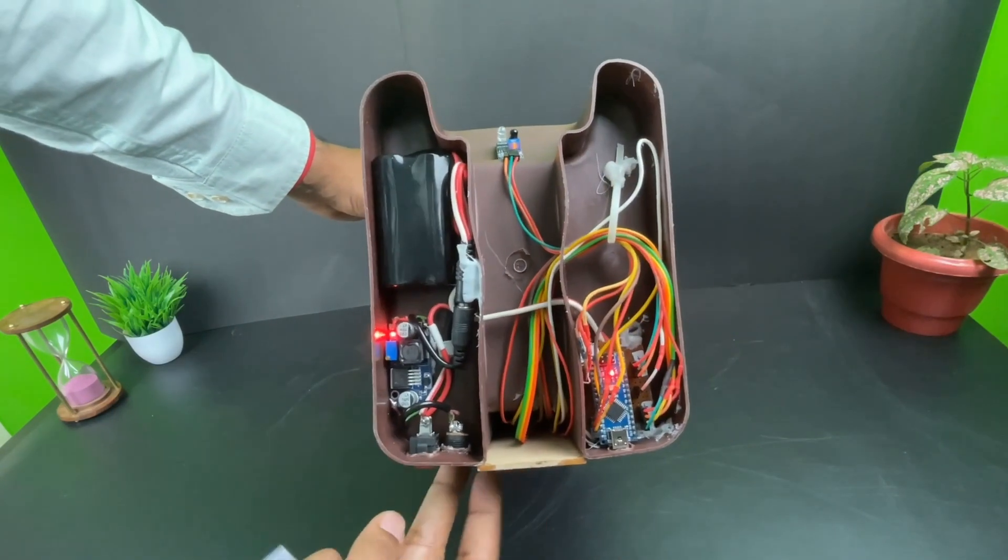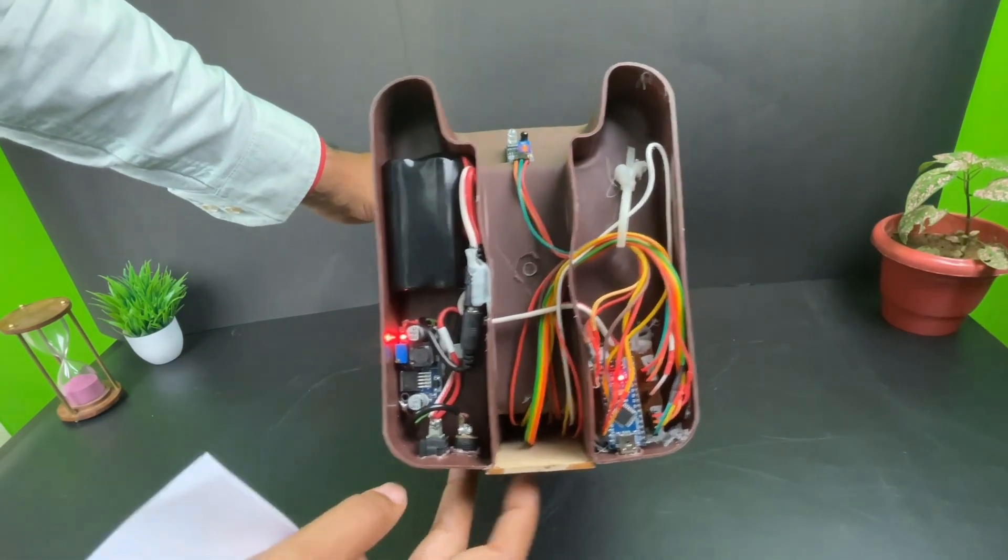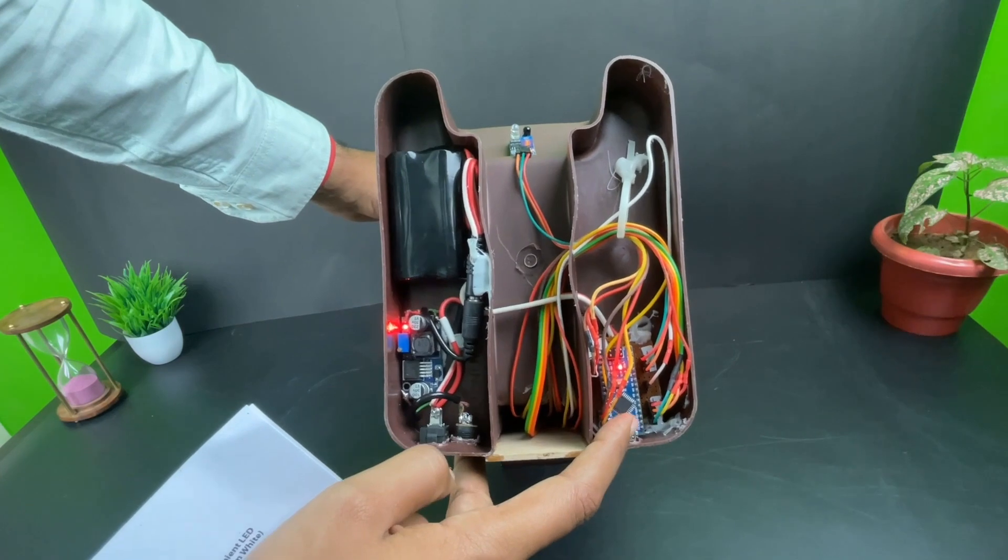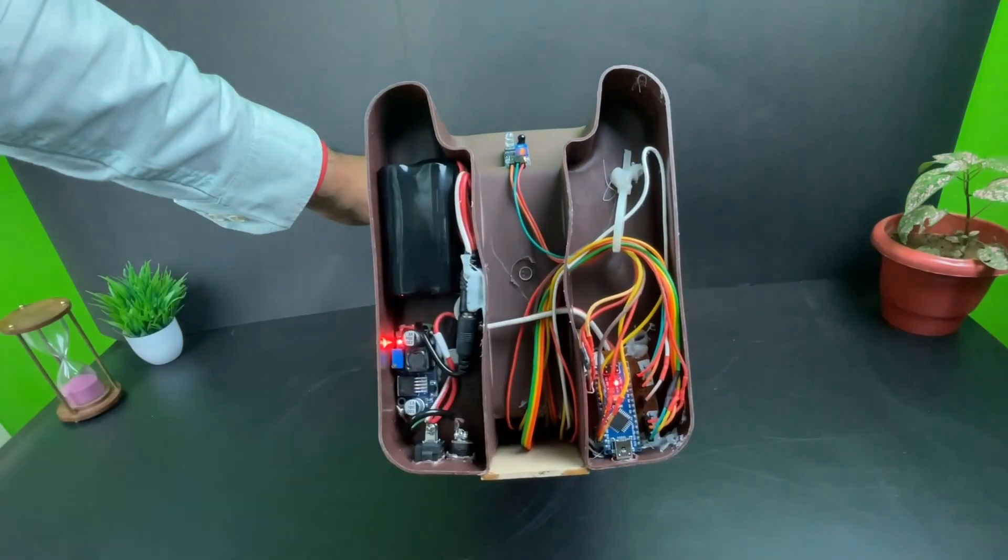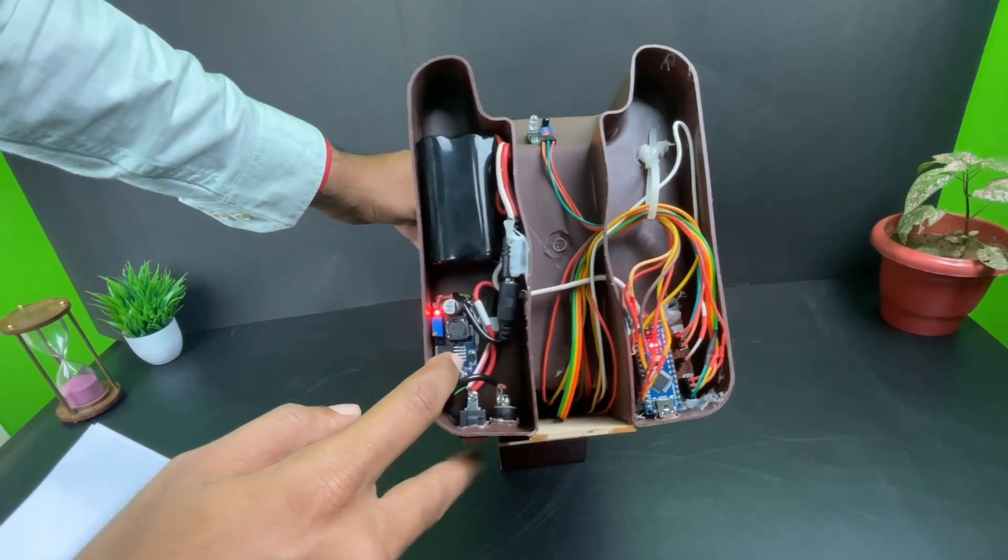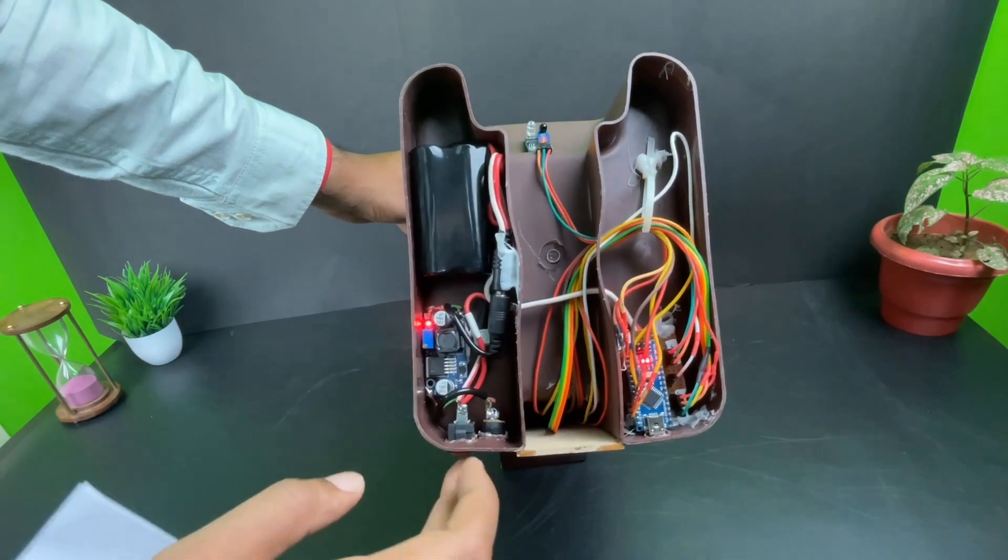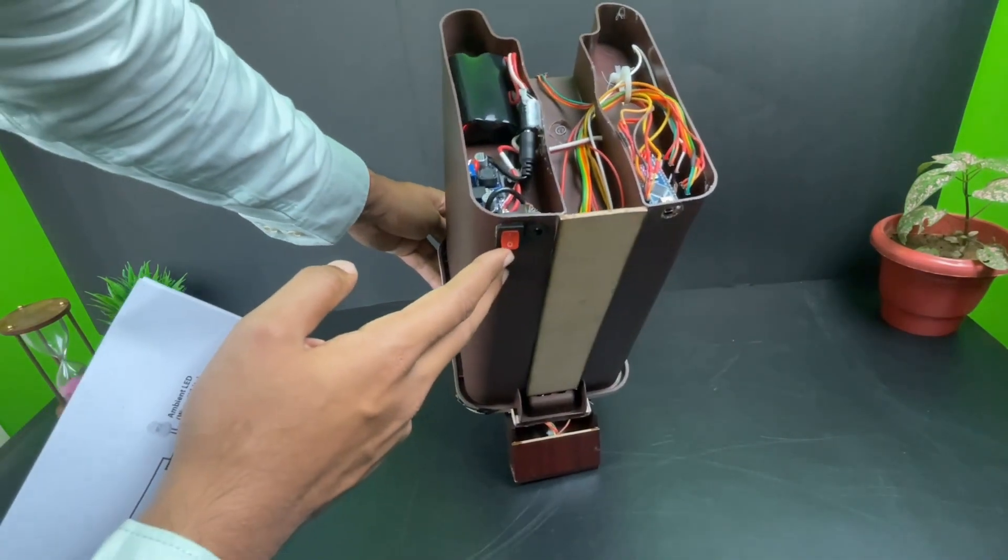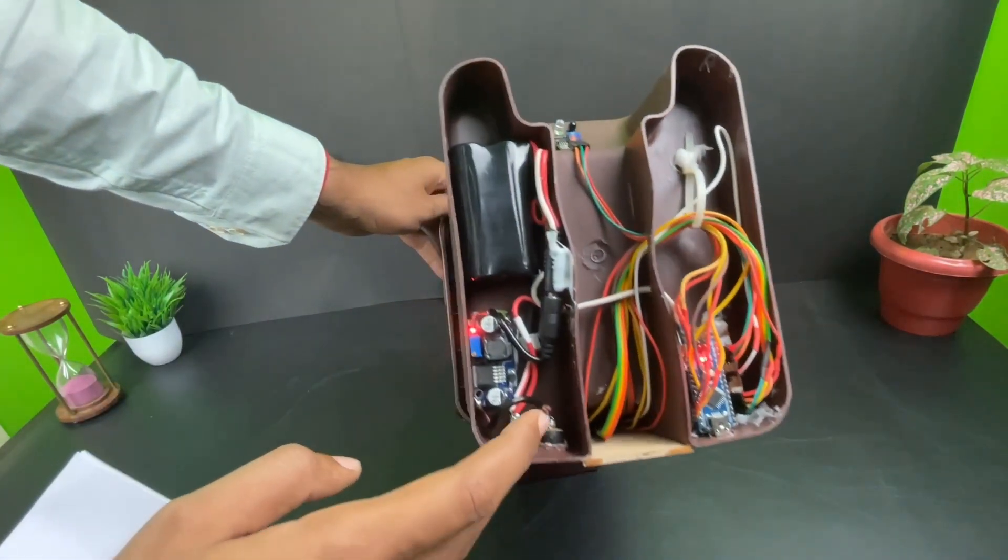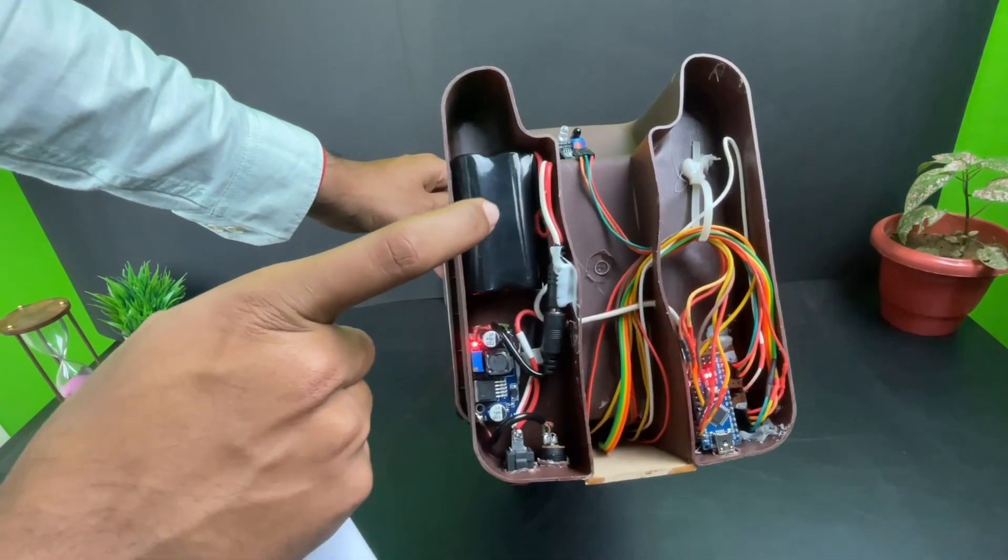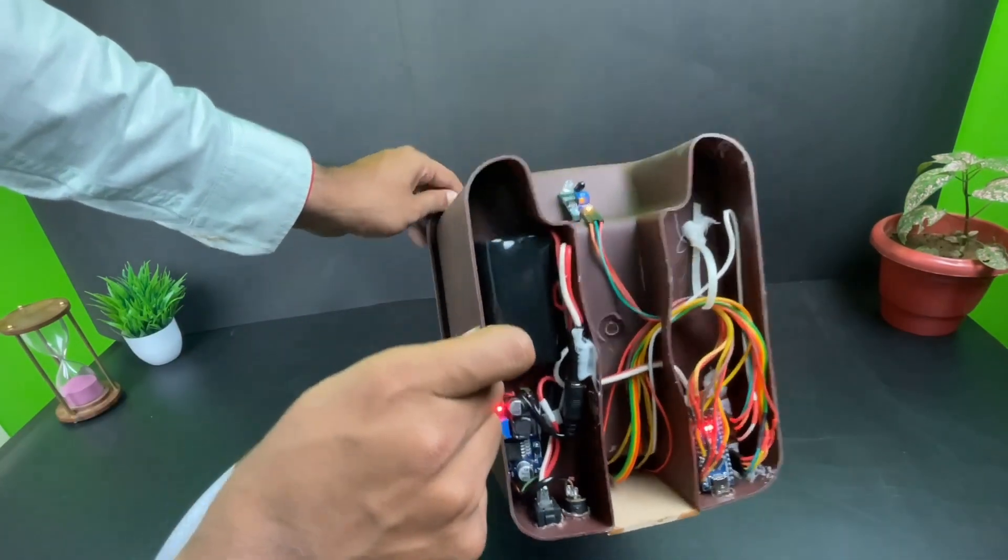Here you can see everything. We have the Arduino Nano over here, the IR sensor wires are coming from here, and then the DC-DC buck converter is over here. You can see the power switch and the charging port present over here, and we have the lithium 18650 batteries over here.